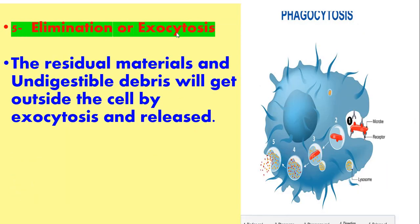Five: elimination or exocytosis. As we see in the figure, which illustrates all mechanisms of phagocytosis: starting with the microbe entering the cell, number two formation of phagosome, number three fusion between lysosome and phagosome forming phagolysosome, number four destruction of microbes, and number five elimination or exocytosis — the residual material and undigestable debris are expelled outside the cell by exocytosis.